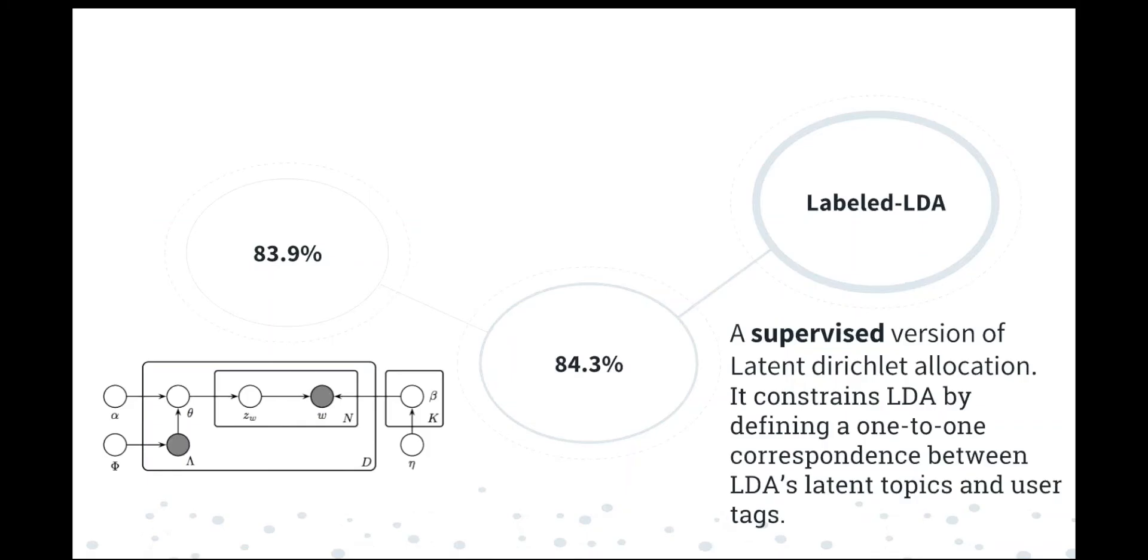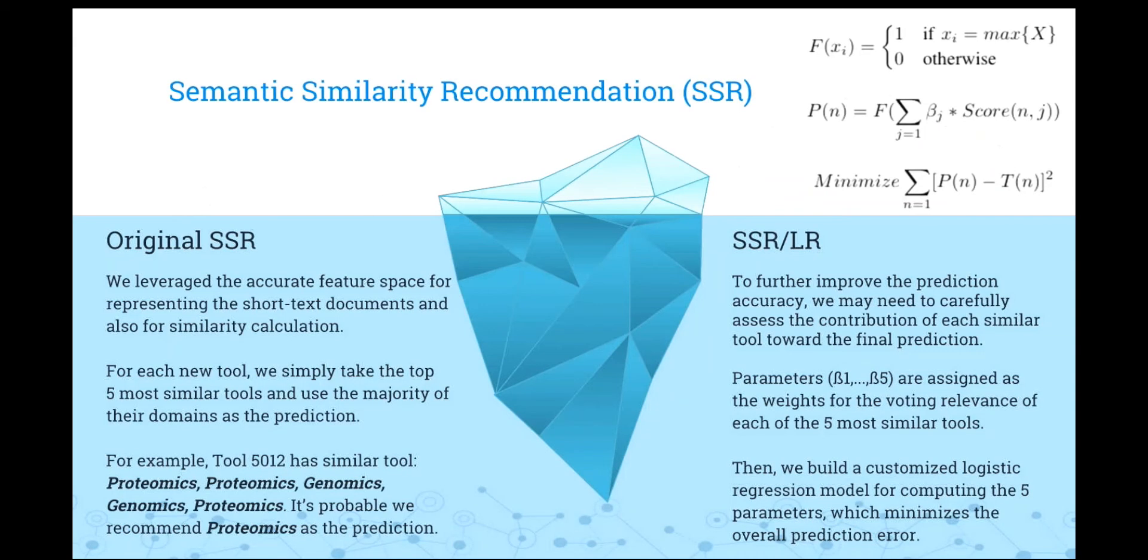So we can see all the models used before don't have very good results. So we are thinking about how to deal with our bad data. We just used descriptions to predict our domains, but we forgot about the relationship between each tool. Maybe we can leverage the relationships for the prediction. So we got our own method, the semantic similarity recommendation. This is based on the similarity calculation from the doc2vec, from the TextRank.